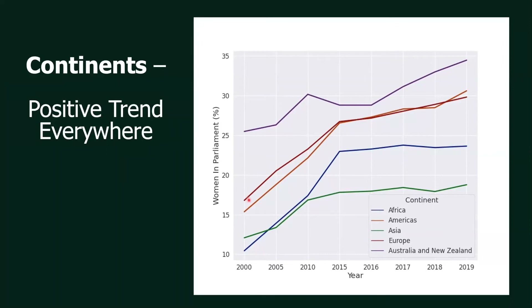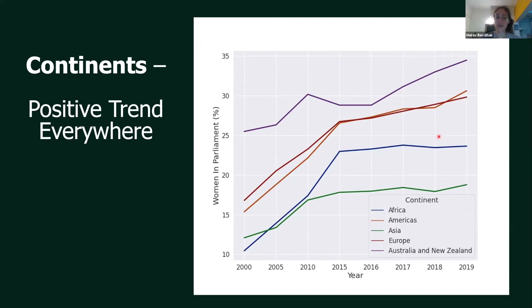Europe and the Americas started around here and they finished here, which is really high relative to where they started, though rising rather slowly. Africa made a big rise during the first 15 years of the 2000s, and then stayed on the same level until 2020. However, it's important to note that the highest percentage reached on a continent level is less than 35%. Asia is still less than 20%, Africa is a bit below a quarter, and Europe and the Americas are around 30%. The trend is good, but if we want to reach the UN's target of equality worldwide, then we should step it up.